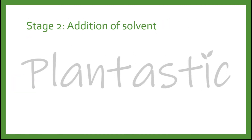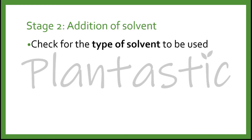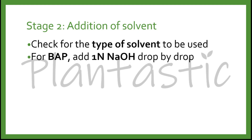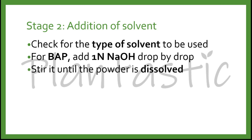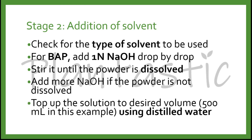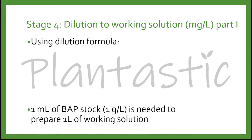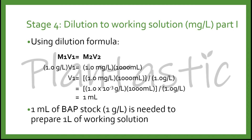Stage 2 is the addition of solvent. You have to check the type of solvent to be used. For example, BAP — you have to add 1 normality sodium hydroxide drop by drop, stir it until the powder is dissolved, and add more sodium hydroxide if the powder is not dissolved. Then top up the solution to the desired volume, for example 500 ml, using distilled water. Subsequently, when you want to dilute it, if you previously prepared in gram per liter, you refer to this slide using the dilution formula M1V1 = M2V2. If you are going to prepare 1 liter of working solution at a concentration of 1.0 mg of BAP, you are going to use 1 ml of the stock solution.